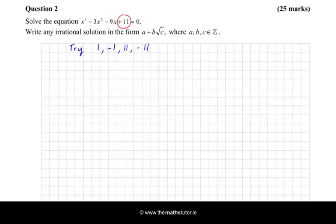We'll just sub it in and see if we get 0, see if it's in fact a solution. So I'll try 1 and I'll sub it in. I get 1, minus 3, minus 9, plus 11, so that gives me 1 plus 11 is 12, take away 12 which is 0. Well that's good, I don't have to try the other ones.